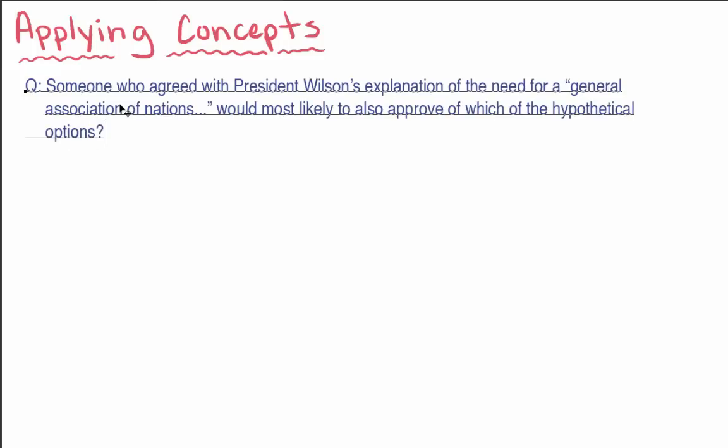The question stem starts by referring to someone as a way of introducing a new person who was not mentioned in the passage. When the question introduces a new person or context, this is a clue that this will be a reasoning beyond the text question. The question also says you're being asked to think about hypothetical options. Hypothetical means that something exists as a possibility, but that it may or may not be true in reality. This phrase is another clue that you're being asked to go beyond what the text says.